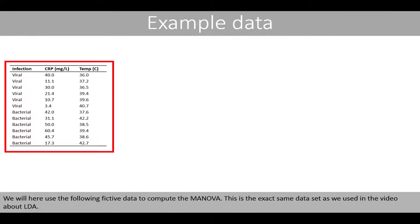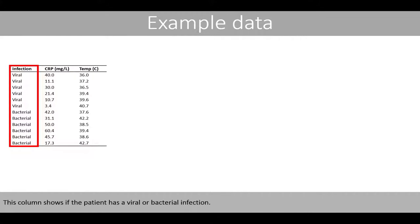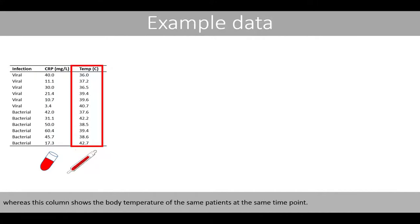We'll use the following fictive data to compute the MANOVA. This is the exact same data set as used in the video about LDA. The data represents measurements of some clinical variables on 12 patients. One column shows if the patient has a viral or bacterial infection, another shows the concentration of C-reactive protein in blood when the patients entered the hospital, and another shows the body temperature of the same patients at the same time point.